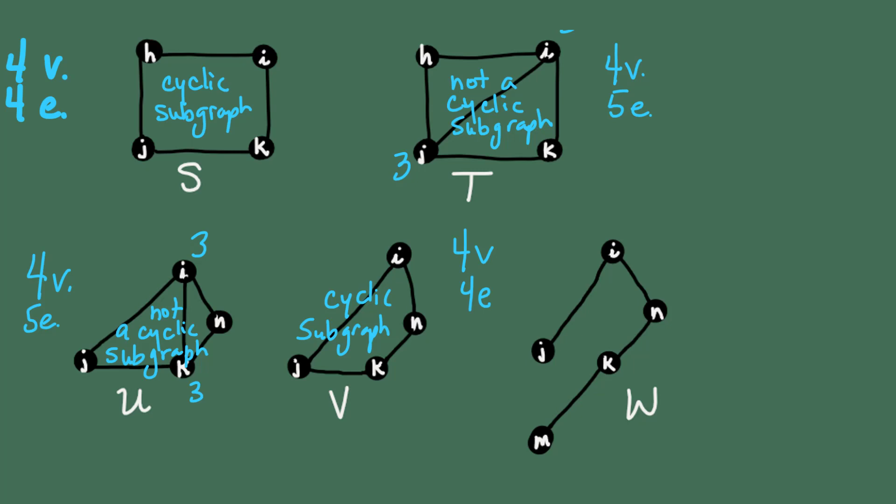Now let's look at subgraph W. Subgraph W has five vertices, but only four edges, which causes it to fail to loop back around. So it's definitely not a cyclic subgraph. We can also see that vertices J and M have degrees one, not degree two. So subgraph W is not a cyclic subgraph.